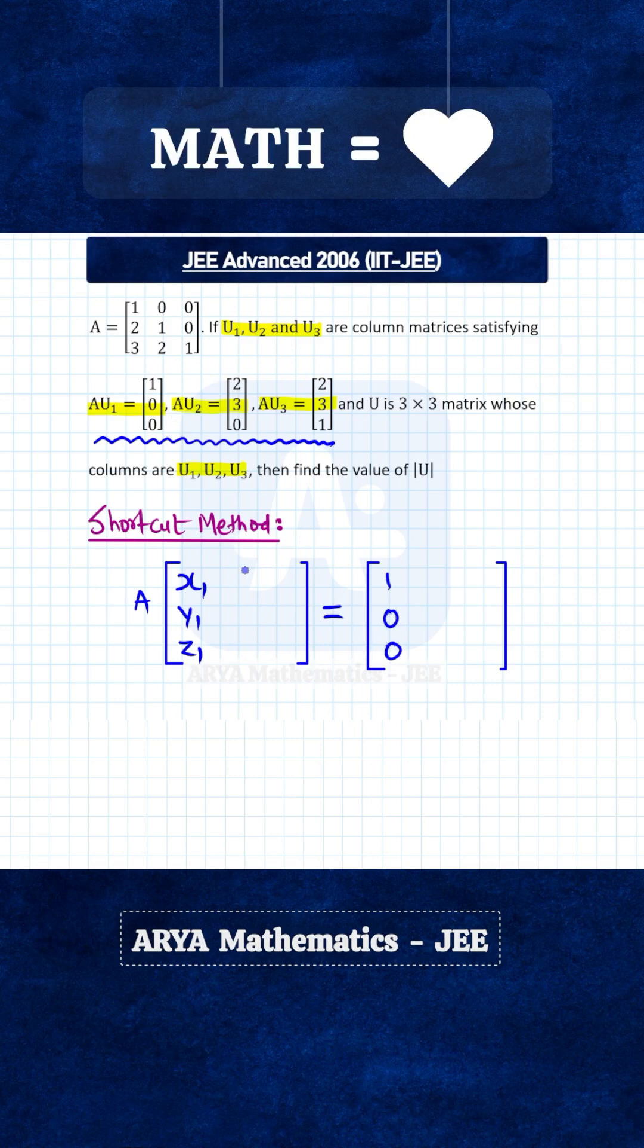Similarly, let us say u2 is another column matrix and the elements are x2, y2, and z2, so then you can write the second column as x2, y2, z2, and from here we'll write 2, 3, and 0.